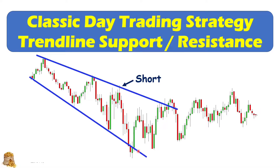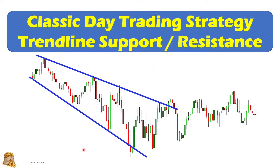Also, when the market goes up to test the trendline for the fourth time, you can see that the market this time didn't go down further. Instead, it gives you a bear trap. That is why the third time touch gives you the highest probability for trading. The same logic applies to the bottom trendline here.